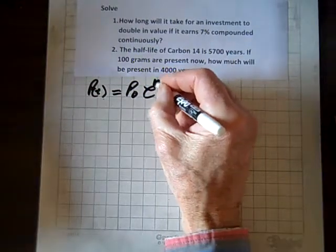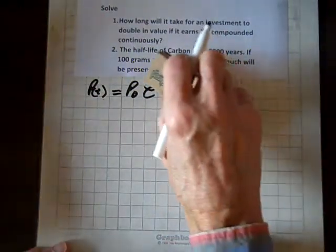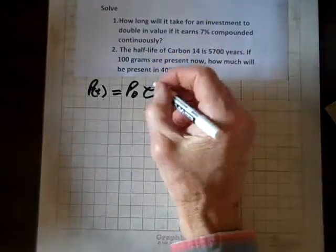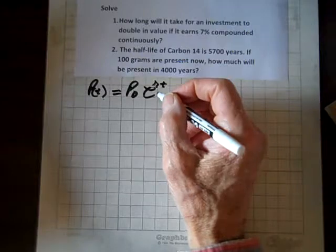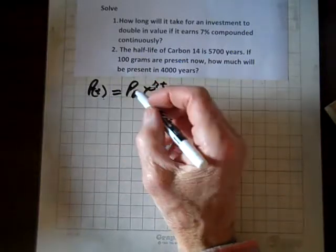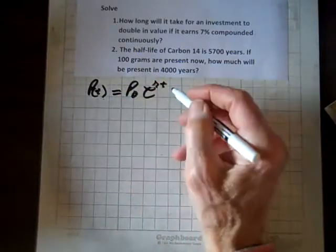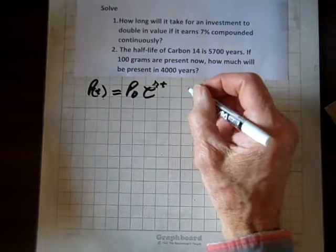r, excuse me, keep writing k there, r, t. We can change these letters, but the general structure of the equation is still the same.